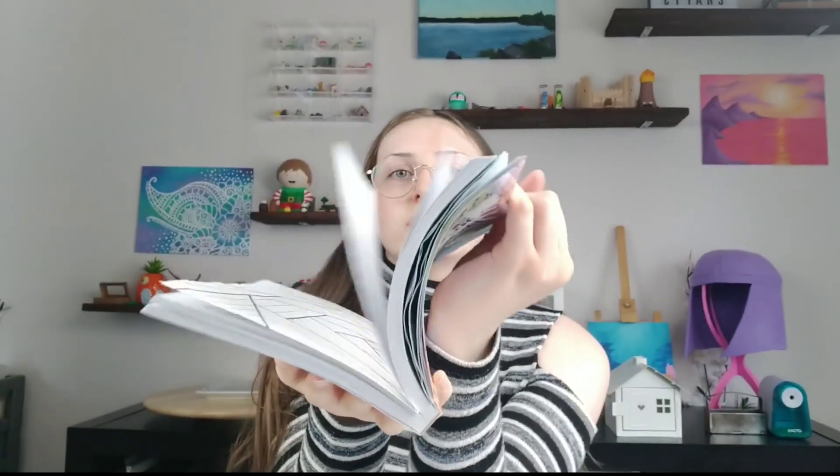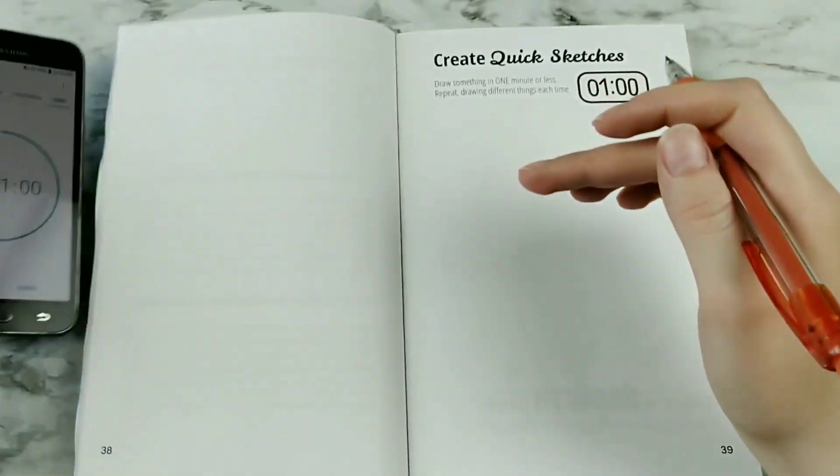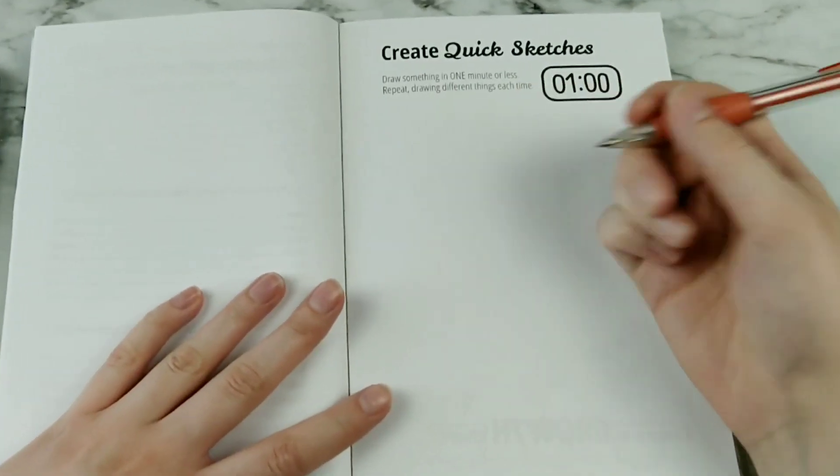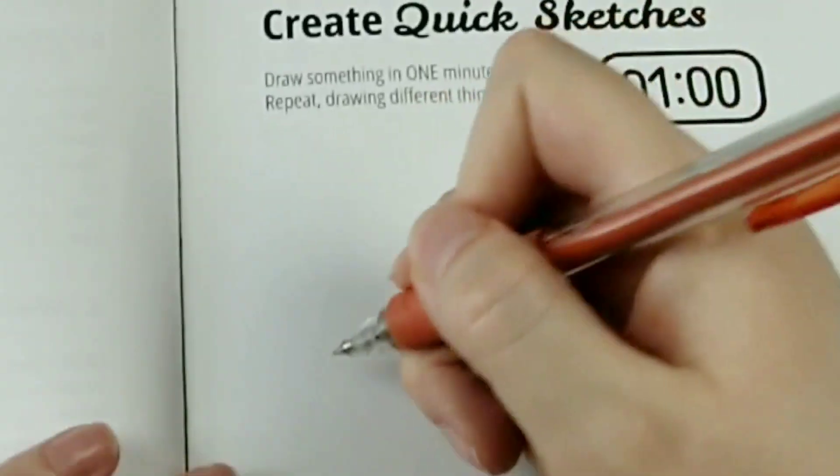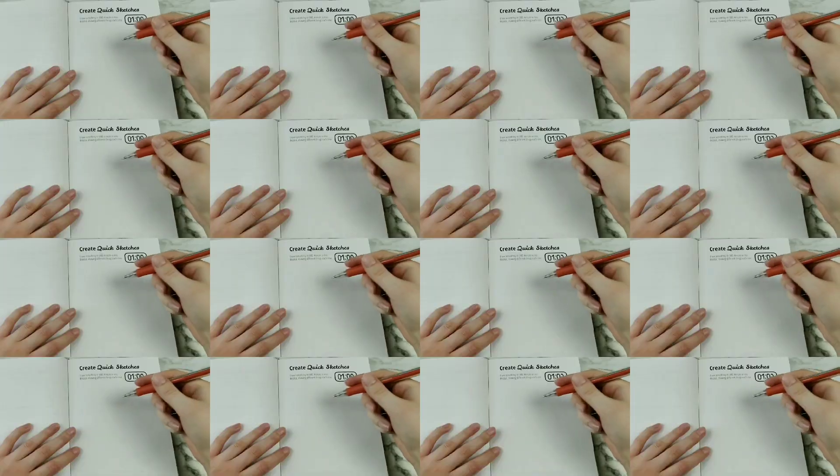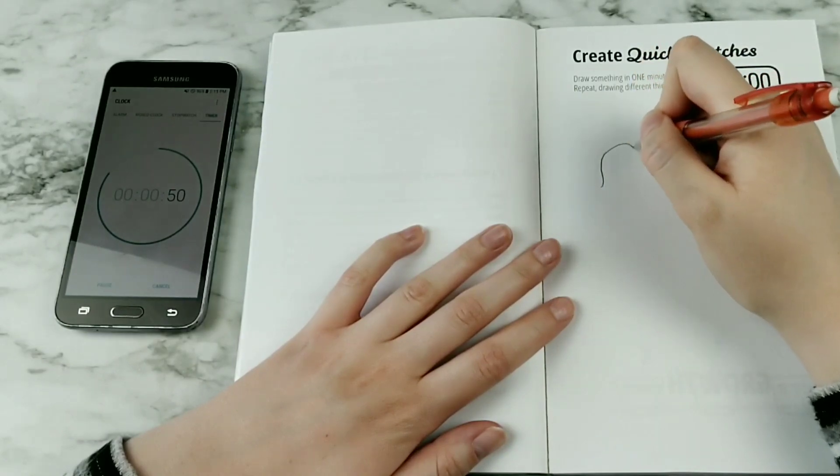Okay, pick a number between one and ten. No wait, you can't do that. All right, paper gods, please give me a good page to do. Create quick sketches, draw something in one minute or less, repeat drawing different things each time. Okay, I can do this. And go! Oh crap, I didn't even realize what I was gonna be drawing. Octopus, yes octopus.